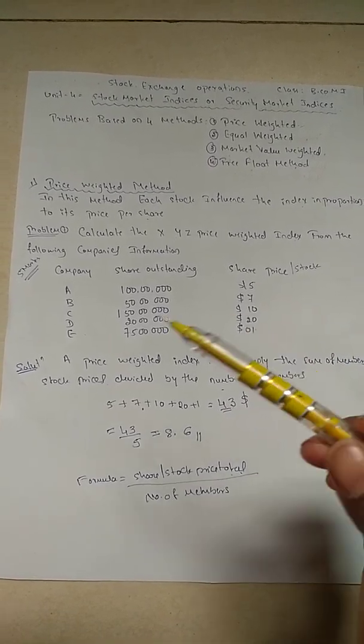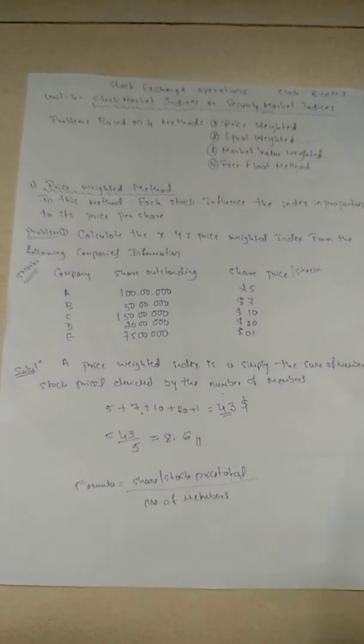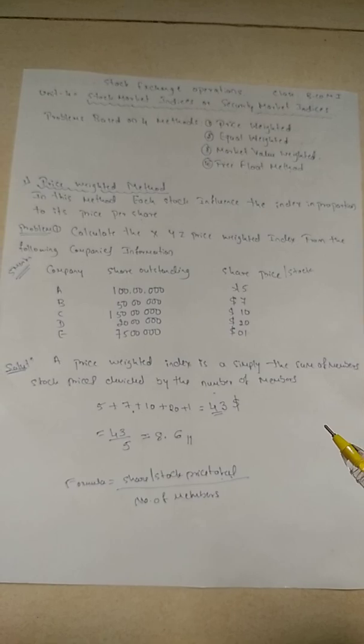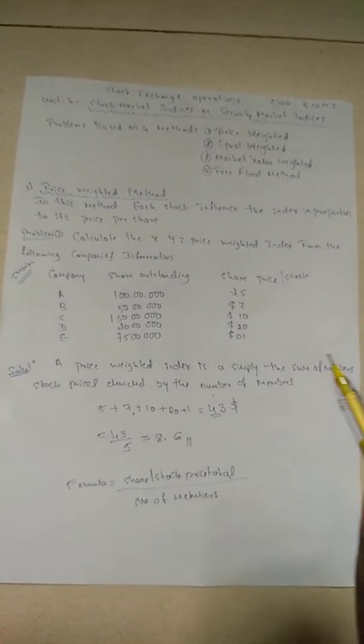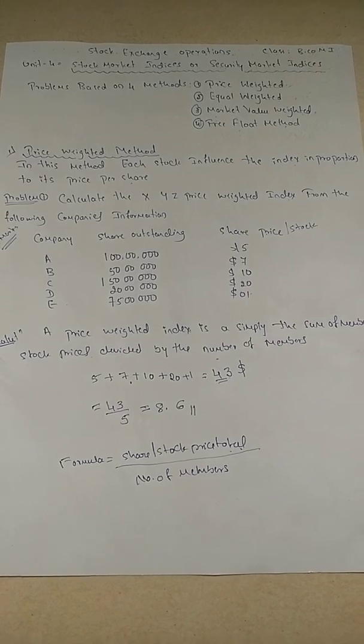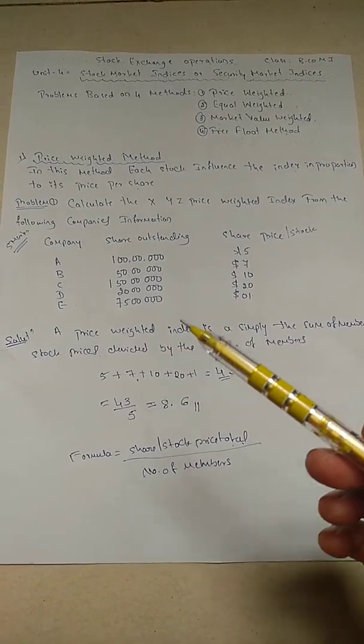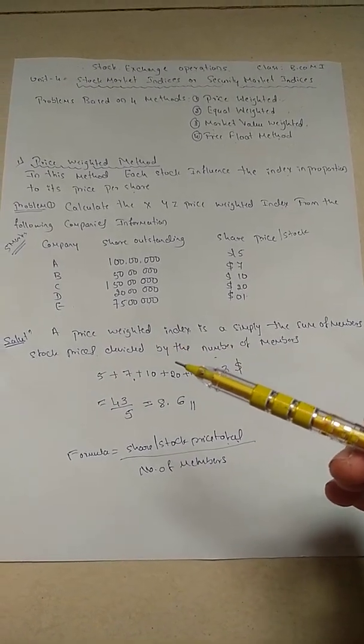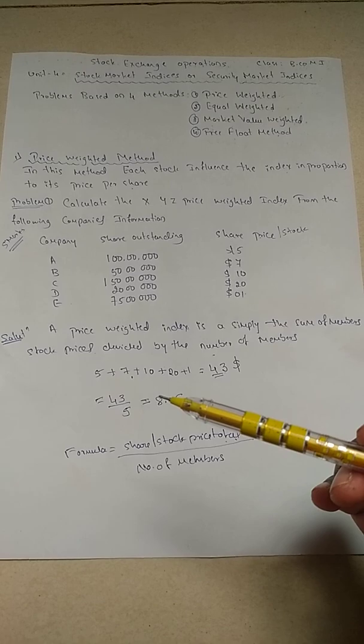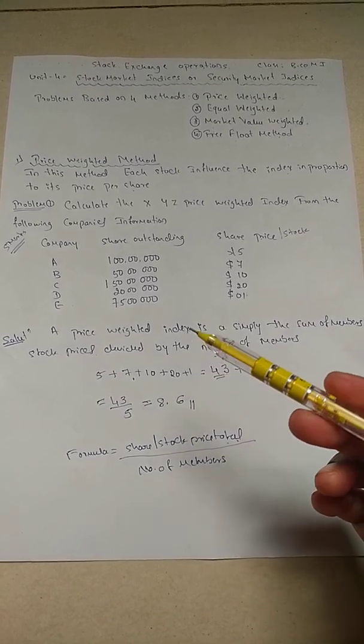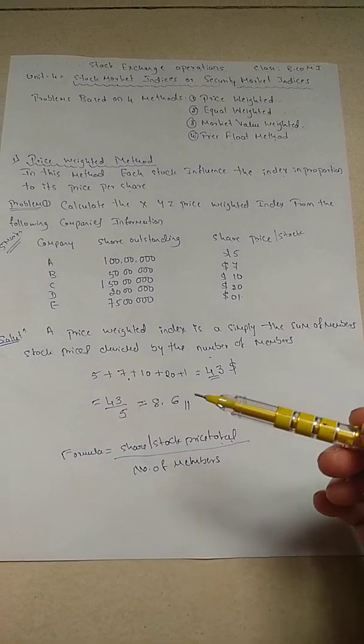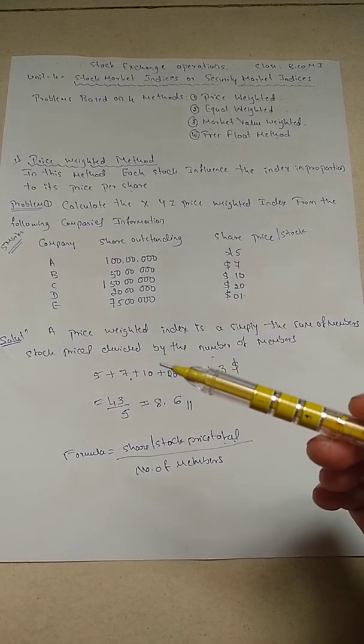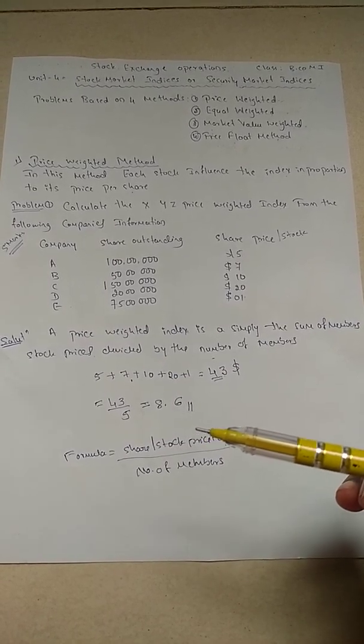With the help of this formula we calculate the sum of all the stock prices and number of members. I hope you understand this problem. This is only for 5 marks questions. In this video we discussed only the price weighted index method. If you have any doubt or difficulty, please comment in the comment section. In the next video we will see more problems on price weighted method with 5 marks and 15 marks. Thank you, have a good day.